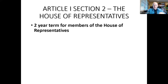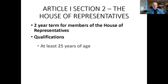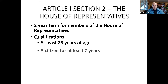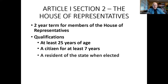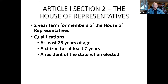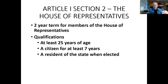Women did not get the right to vote in federal elections until 1920. Article I, Section 2 also sets out qualifications for serving in the House of Representatives: you must be at least 25 years of age, a citizen for at least seven years, and a resident of the state when elected. You don't have to live in the congressional district you represent — someone who represents Los Angeles could live in Orange County — but must live somewhere in that state.